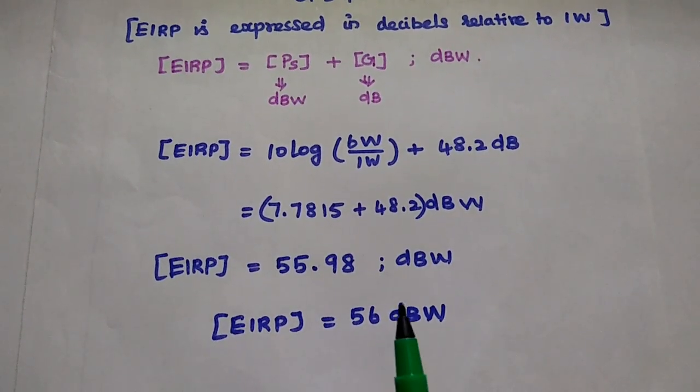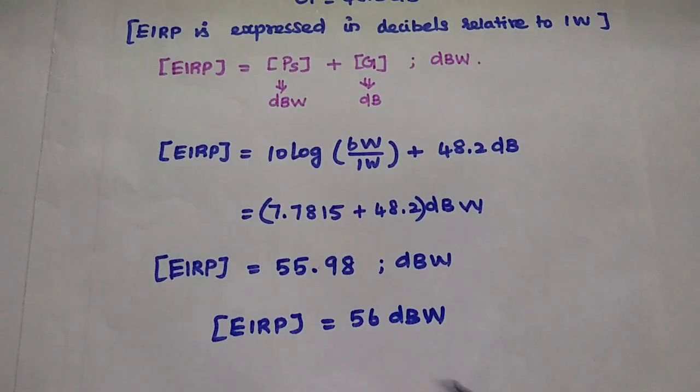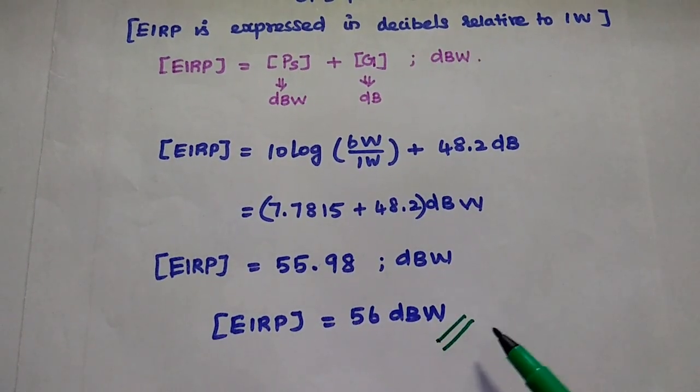We can round off this value as 56. This is the EIRP for the given data.